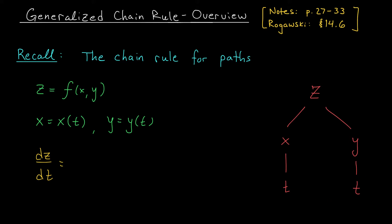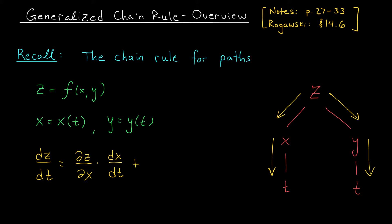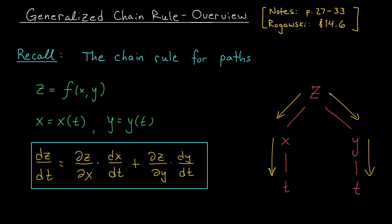The chain rule for paths gives us an efficient way to find it, and it makes use of this diagram. We start by following every branch of the tree that leads us from z down to t. As we move down a branch, we take derivatives and multiply them. Moving down the left branch, we start by taking the partial derivative of z with respect to x — it's a partial derivative because at this level we have two variables, x and y. Next, we multiply this by the derivative of x with respect to t, which is a total derivative because x only depends on one variable. Then we follow the branch on the right, and when we switch branches we add the results. So we add partial z by partial y times dy by dt. And there you go — a nice, efficient way to compute the derivative of z with respect to t.